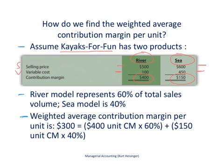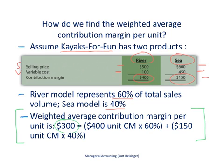Now we just need to know the sales mix for each of these products. The river model represents 60% of total sales and the sea model represents 40% of total sales. With that information and the unit contribution margin for each product, we can figure out the weighted average contribution margin per unit. That is $300, coming from $400 times 60% for the river kayak plus $150 times 40% for the sea kayak.